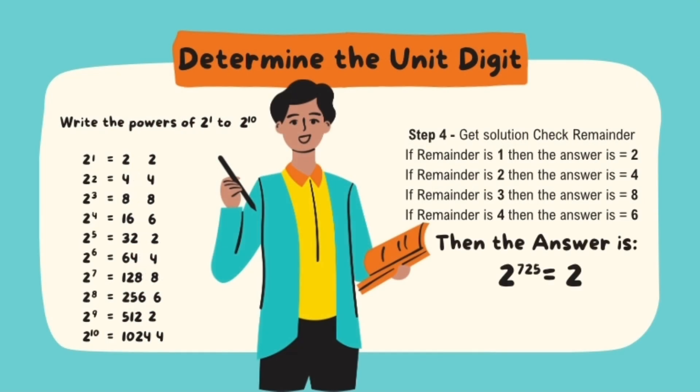The last step, get solution, check remainder. If remainder is 1, then the answer is 2. If the remainder is 2, then the answer is 4. If the remainder is 3, then the answer is 8. And if the remainder is 4, then the answer is 6.